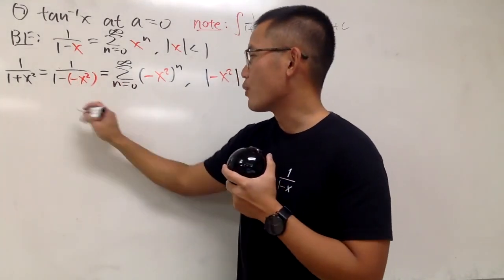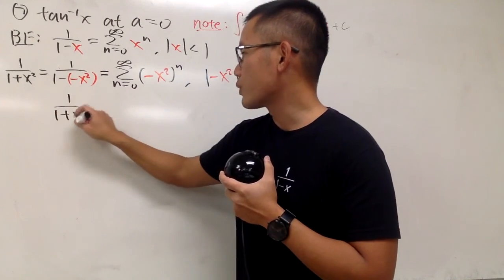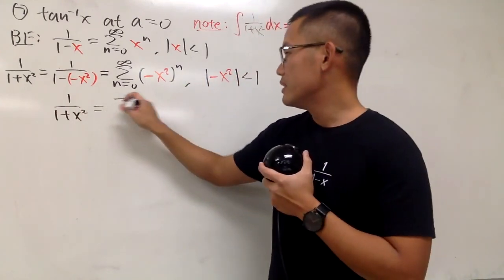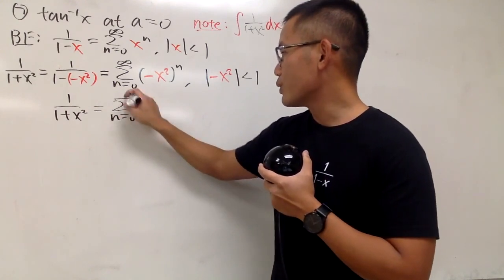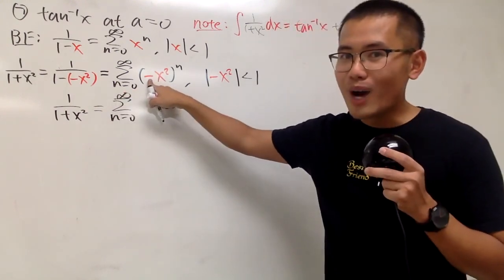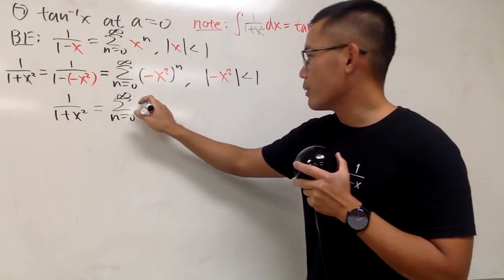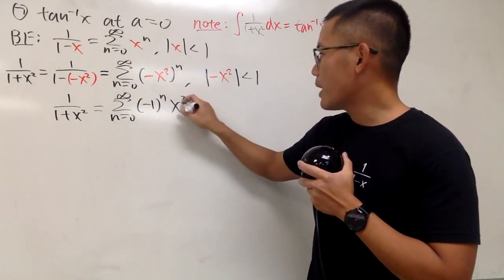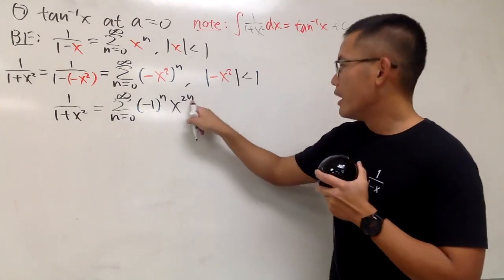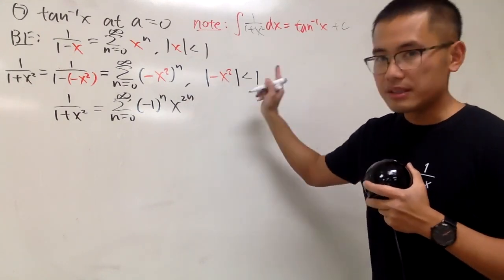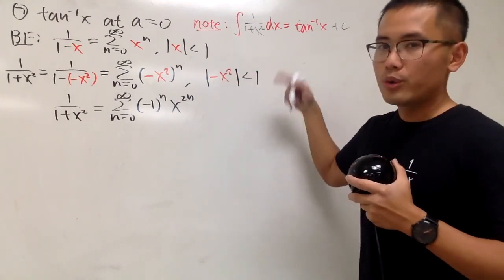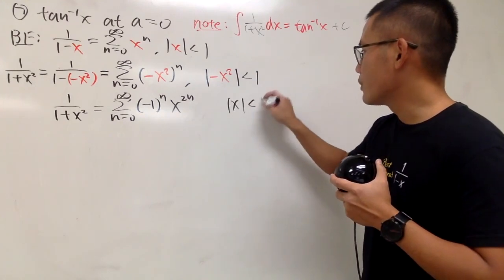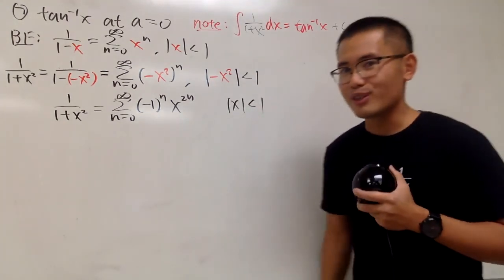Work this out — you see that this is 1 over 1 plus x squared. Simplify this a little bit: this is the series as n goes from 0 to infinity of negative 1 to the nth power times x to the 2n power. And when you have the absolute value, you can take the square root, so all in all we get the absolute value of x less than 1.